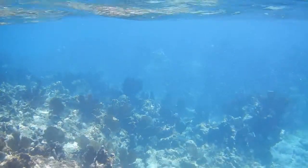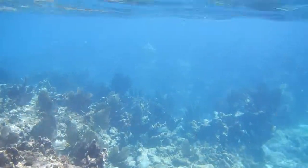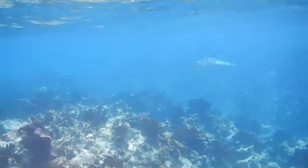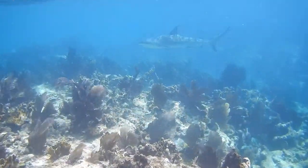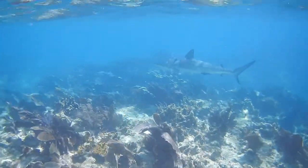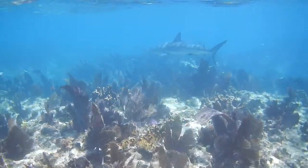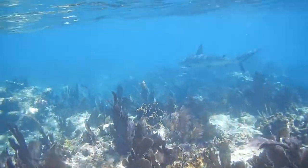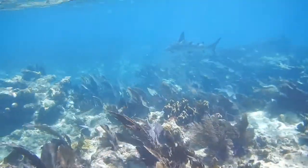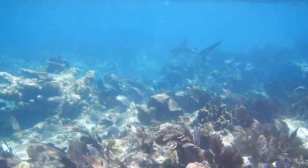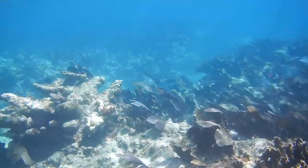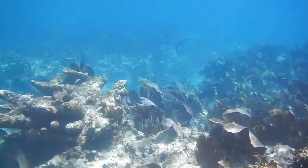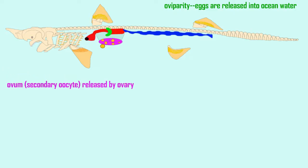Some sharks are oviparous, in that the eggs are released into the water and they hatch outside the body of the female. After the secondary oocyte is released by the ovary and is taken up by the oviduct, it is then fertilized by sperm in the oviduct. Sharks practice internal fertilization.